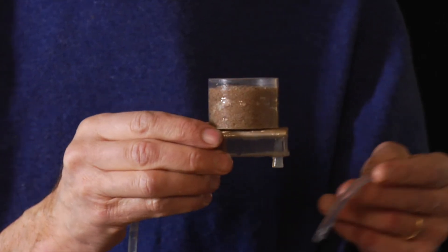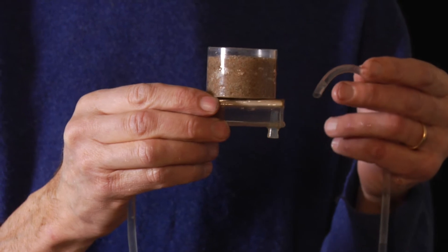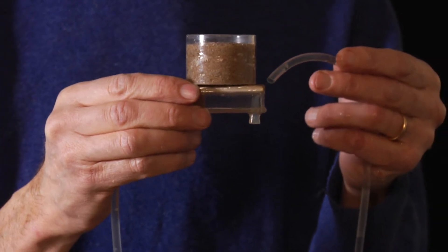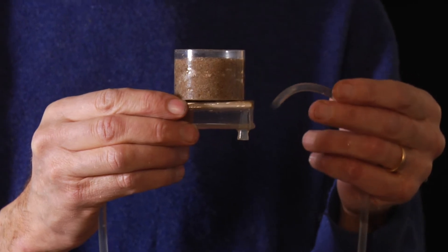One can say that the groundwater table now is at the level of the plate. Here the pressure of water equals that of the atmosphere, as seen by the water level in the tube.